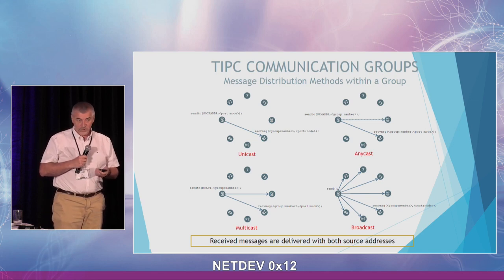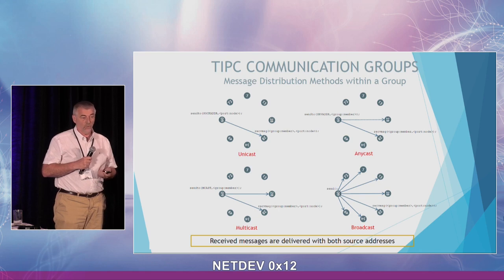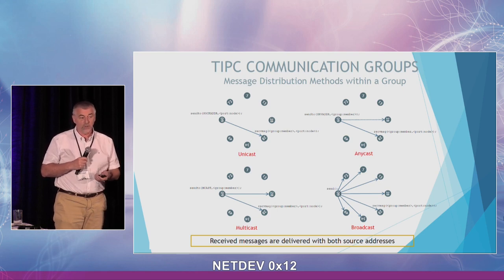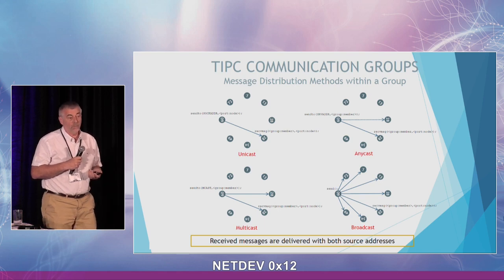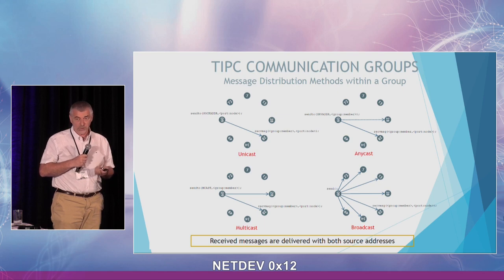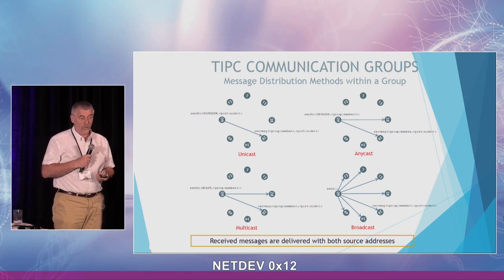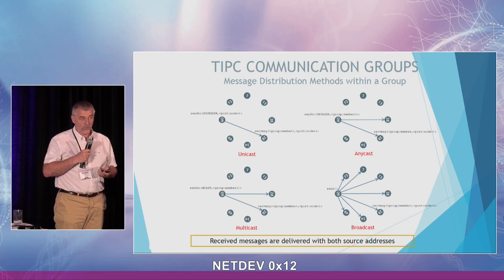Once we established this concept, we realized it can be used for more things: the datagram unicast feature, the anycast feature, multicast, and a new messaging mode — group broadcast. With group broadcast you send a message to all members of the group irrespective of their member ID, using the basic send primitive familiar from TCP. When you receive one of these messages, it is accompanied with the two source addresses of the message.